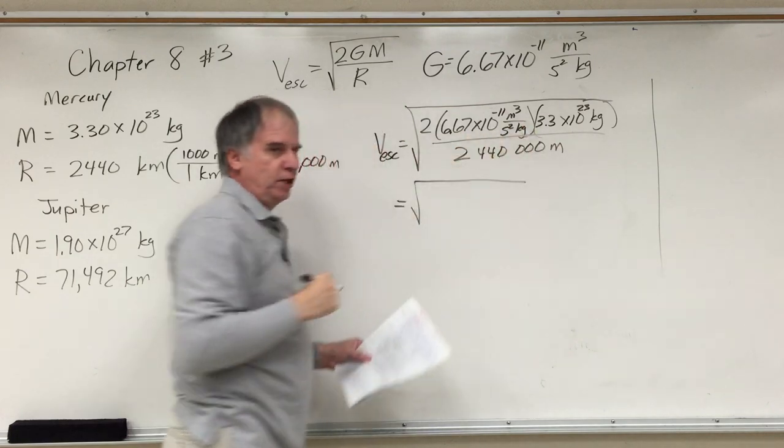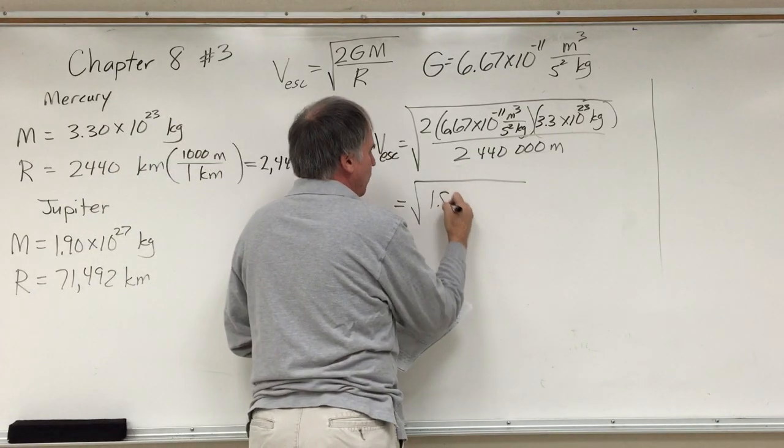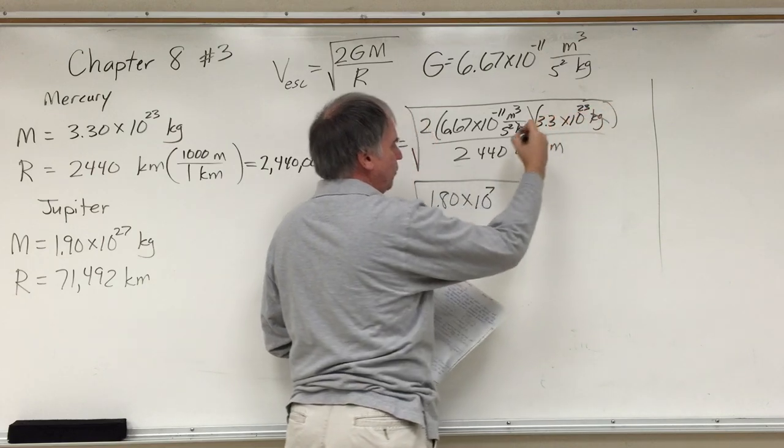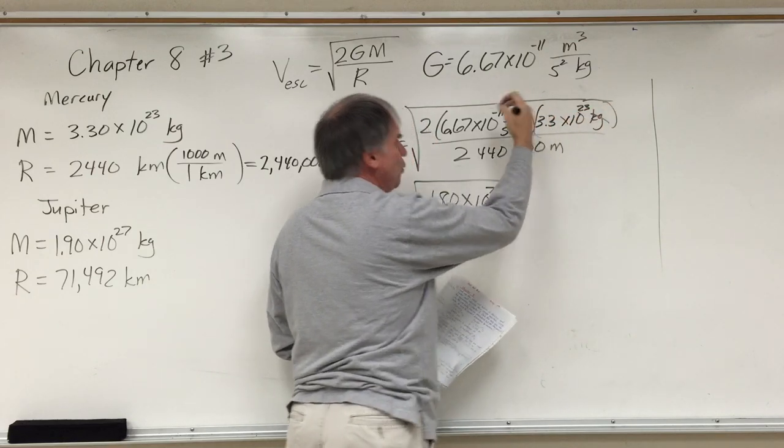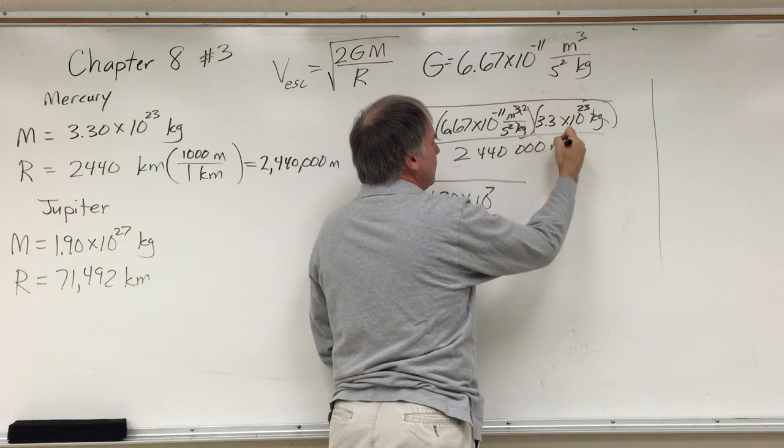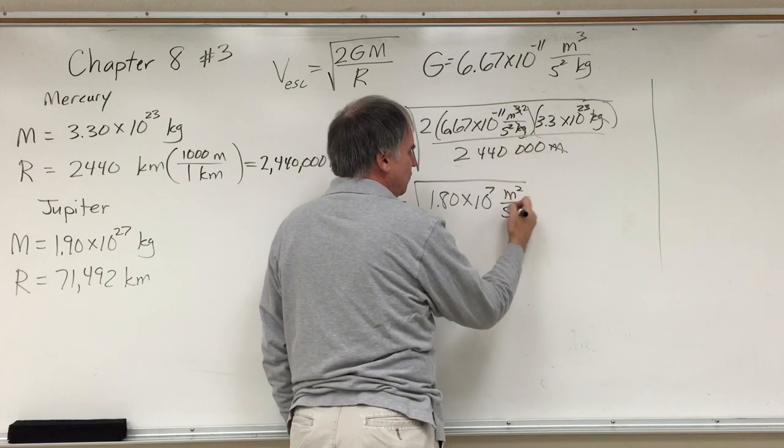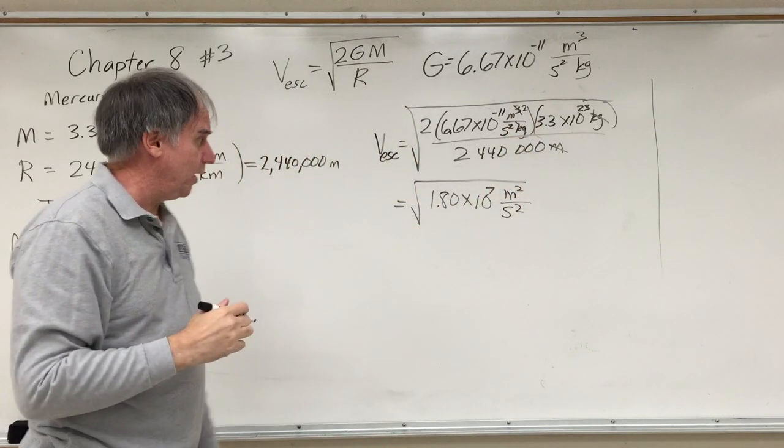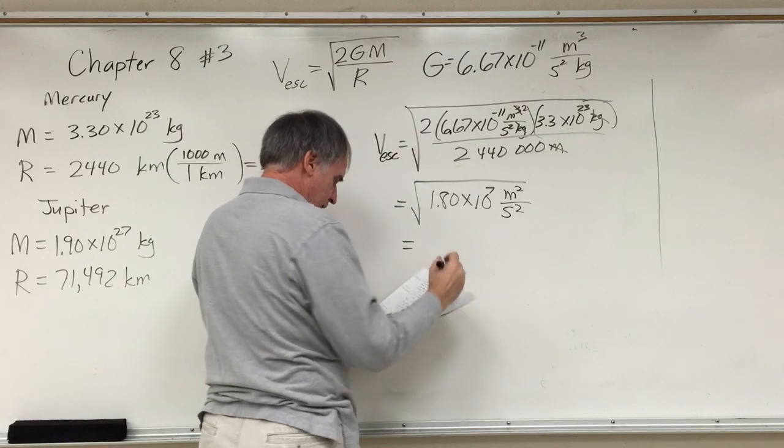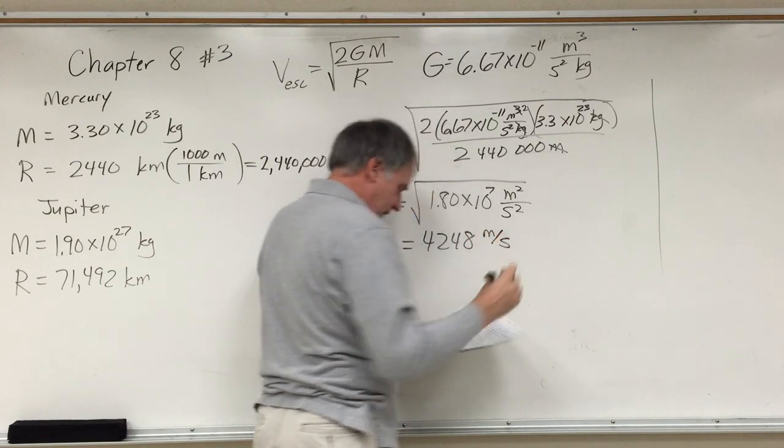First of all, I calculated the numbers inside the square root. 1.80 times 10 to the 7. The kilogram units cancel. Meters cubed, meters times meters times meters divided by meters. One of the meters cancel. We still have a meter squared divided by a second squared, but we still have to do our square root. And with the square root, we get 4,248 meters per second.